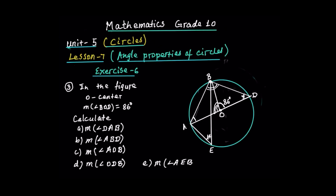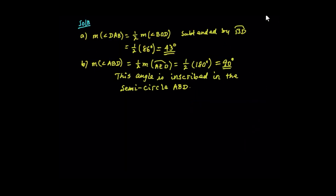Now, the measure of angle ABD. Angle ABD — it is inscribed in the semicircle. It is a right angle. The measure of angle ABD is half the measure of its subtending arc AD. Half of 180 degrees is 90 degrees. It is inscribed in a semicircle.